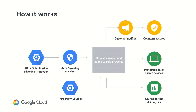You'll get that protection on three billion plus devices. This is far beyond the reach of Chrome or any Google products. The vast majority of browsers, security companies, and web filtering companies use this list in order to protect their users. So you'll get a wide variety of protections almost wherever your users are. And finally, this will be integrated into GCP reporting analytics through Cloud Security Command Center.